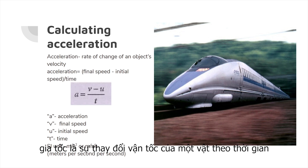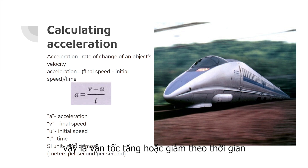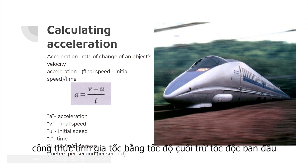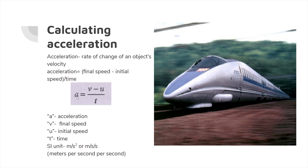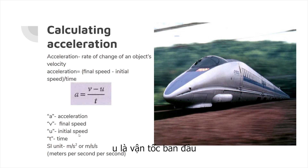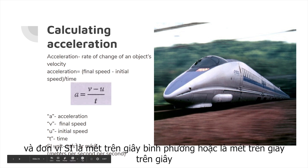Acceleration is the rate of change of an object's velocity — how much the velocity increases or decreases with time. The formula is: acceleration = (final speed − initial speed) ÷ time, or a = (v − u) / t, where a is acceleration, v is final speed, u is initial speed, and t is time. The SI units are meters per second squared (m/s²).